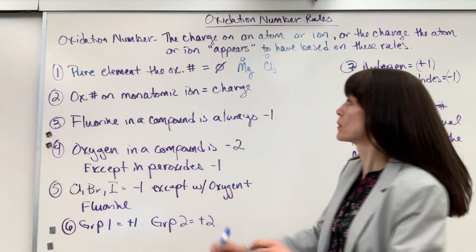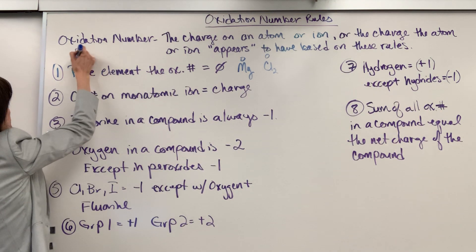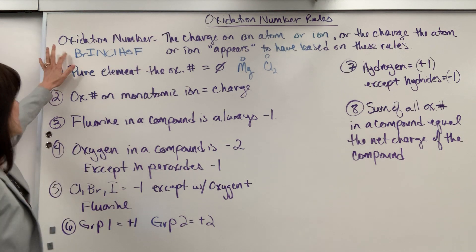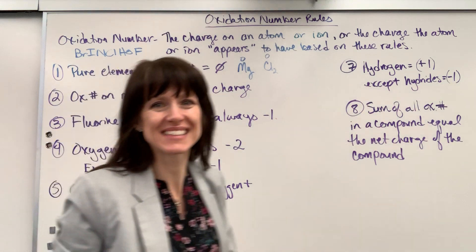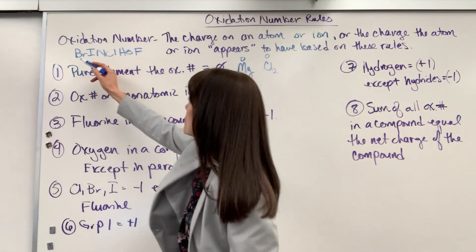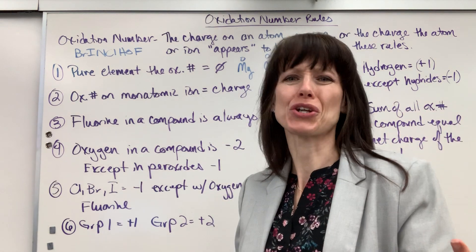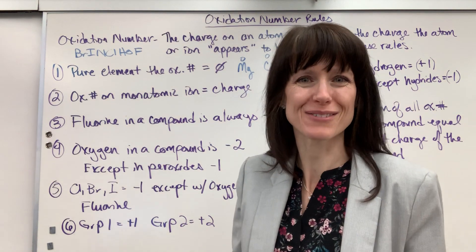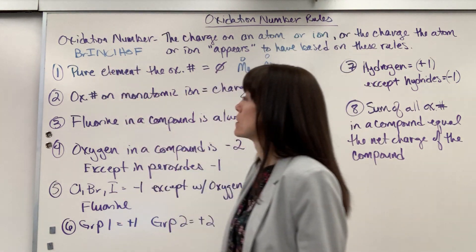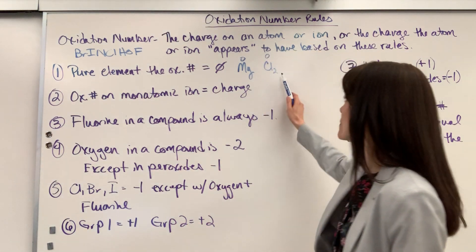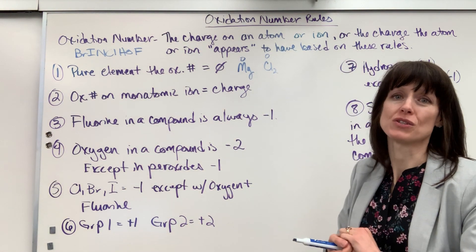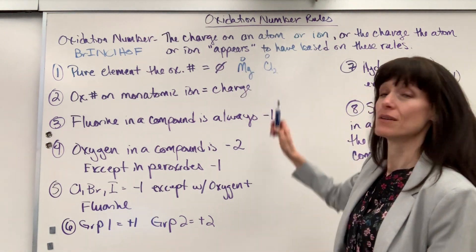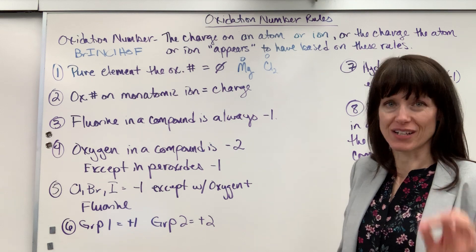Just a reminder: there are seven diatomic elements. If you see bromine, iodine, nitrogen, chlorine, hydrogen, oxygen, or fluorine — here's how to memorize it: Brinklhoff. Pretend it's a girl's name in German. All seven of those elements when they're by themselves will have a subscript two because they bond to themselves for stability to have full octets. So even our diatomic elements by themselves have an oxidation number of zero.